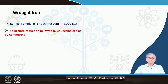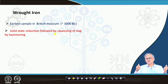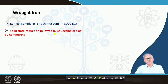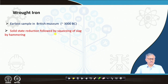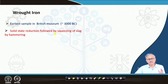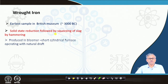Then what you have to do is hammer the material — the slag will be squeezed out, and partially some slag will be intermixed with the iron produced. That is called wrought iron. The word 'wrought' comes basically from 'working' — if you work on it. Solid state reduction followed by squeezing of slag by hammering — that is called the wrought iron.